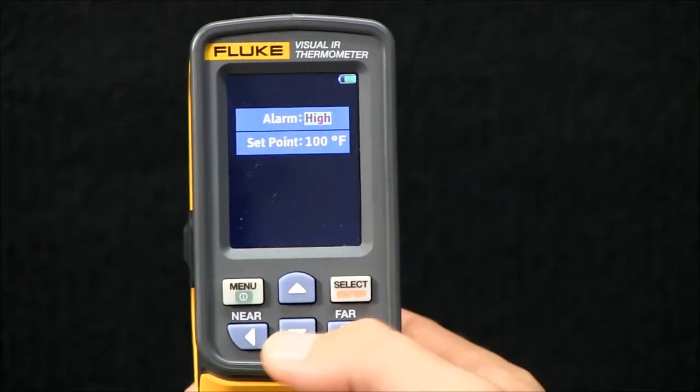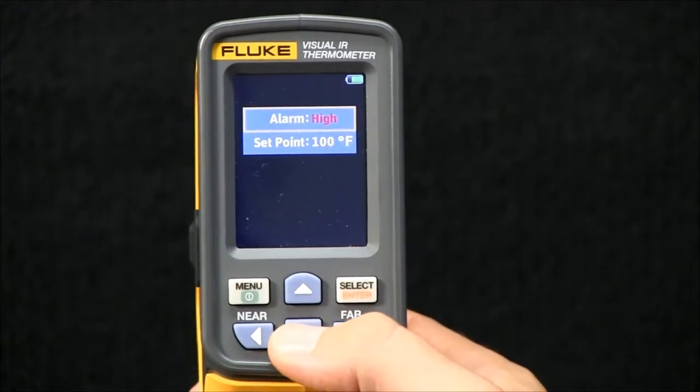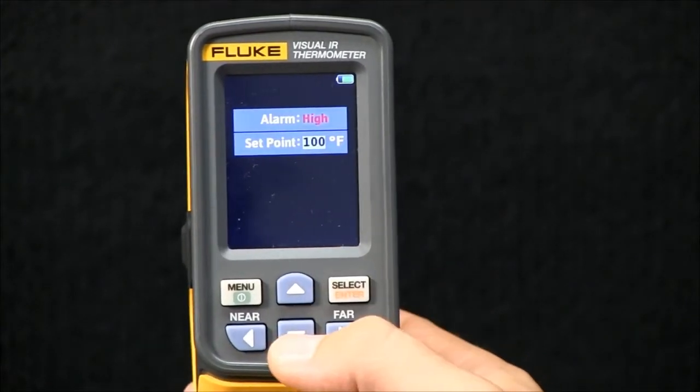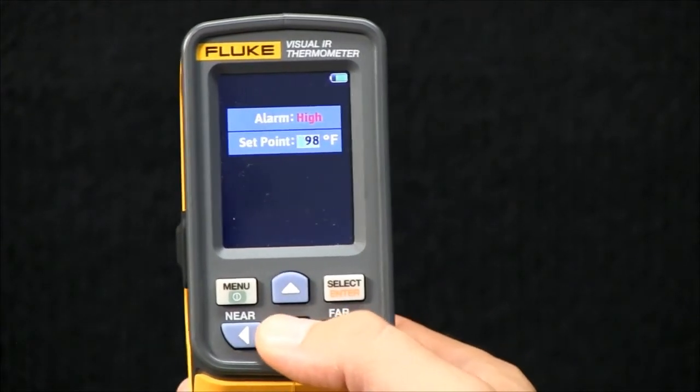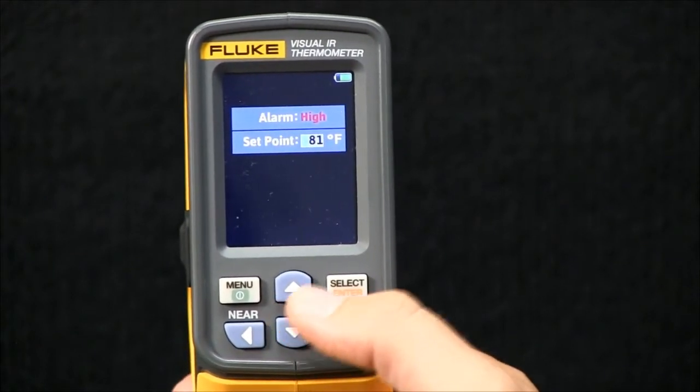In this example, you can select low or high. I will select high. Now, you select the temperature threshold. In this example, I'll select 81 degrees.